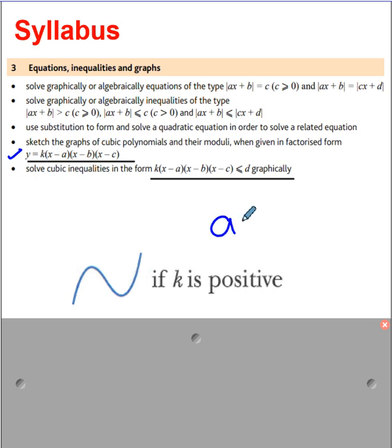So if you are writing ax³ + bx² + cx + d or you are writing in the factorized form, the coefficient here, if it is positive then the shape of the cubic curve will be like this.